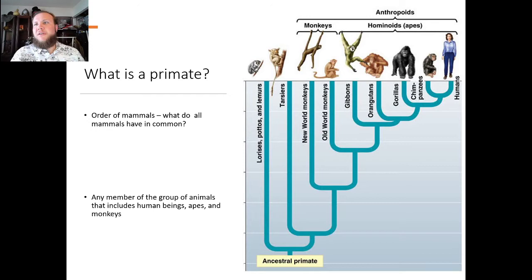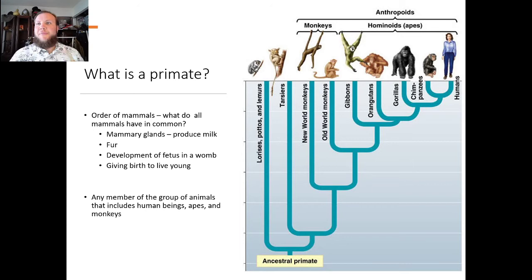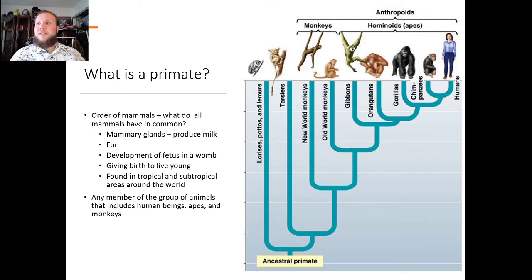So what is a primate? A primate is in the order of mammals. What all mammals have in common is mammary glands — they produce milk, have fur, develop a fetus in the womb, don't lay eggs, and give birth to live young. Primates are found in tropical and subtropical areas around the world. Any member of the group includes human beings, apes, and monkeys — also tarsiers, lorises, and lemurs.